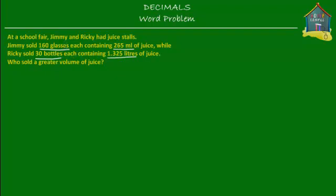So there was a school fair and Jimmy and Ricky had juice stalls. Jimmy sold some amount of juice and Ricky sold some amount of juice, and we have to find out who sold more juice, or the greater volume of juice. So let's find out.